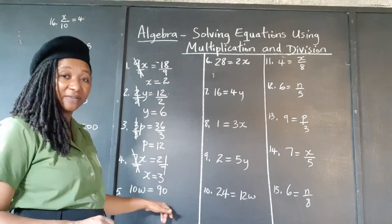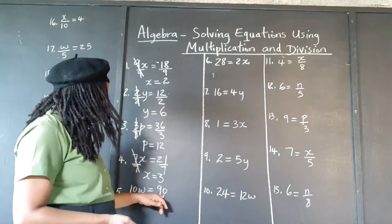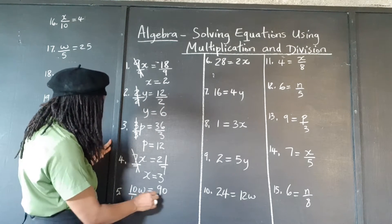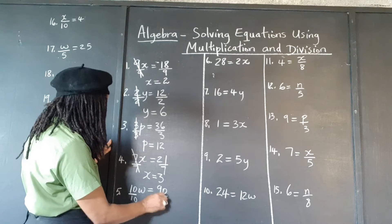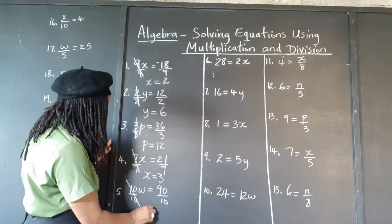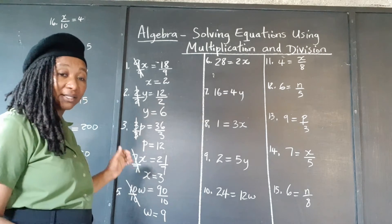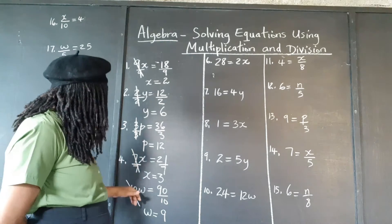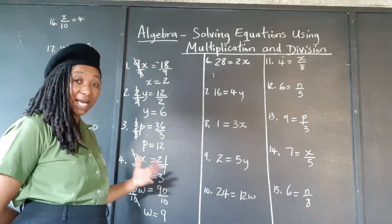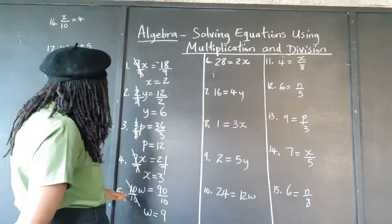10w gives 90. Which number, when you multiply it by 10, gives 90? Let's divide both sides by 10. The 10s cancel out, and we're left with w equals 9. Let's double check: if we have 10 and we multiply it by 9, do we get 90? Yes, 10 times 9 is 90. So we know that we are correct.